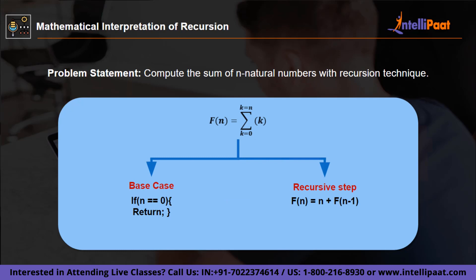In this function f(n) = summation of k from 0 to n, we have two parts. First is the base case: if n equals 0, the function shuts down and returns nothing. Then we have the recursive step: f(n) = n + f(n-1).